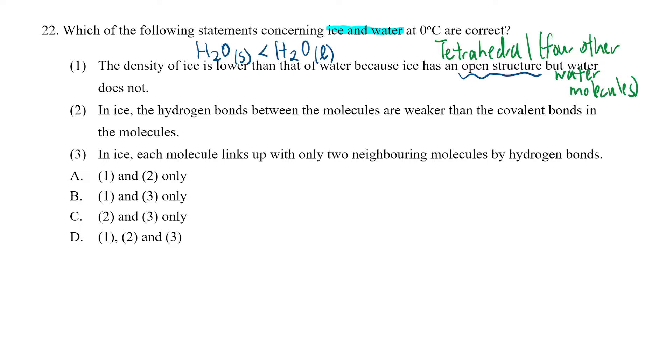Let's look at option two: In ice, the hydrogen bonds between the molecules are weaker than the covalent bonds. And we have learned this in book 1B, where hydrogen bonds are obviously weaker than those of the big three.